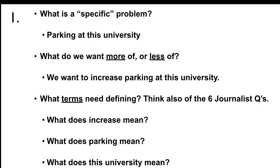In Step 1, identify and define the problem, you might want to ask: What is the specific problem? For example, parking at this university. What do we want more or less of? We want to increase parking at this university. What terms need defining? Also, think of the six journalists' questions: who, what, when, where, why, and how. Terms that might need defining in this example are: what does 'increase' mean? What does 'parking' mean? And how are we going to define 'this university'?